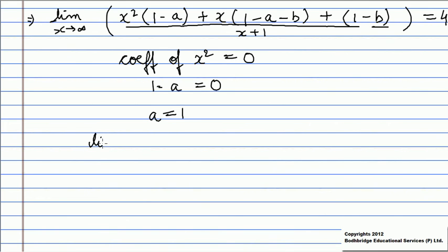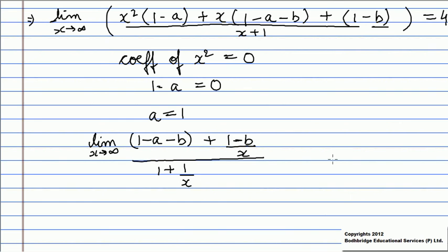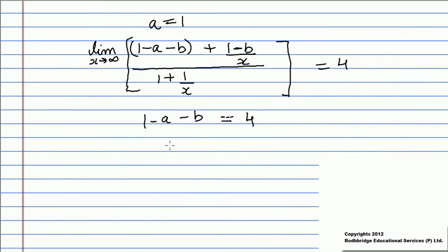Then, the limit as x tends to infinity of (1 - a - b + (1 - b)/x) upon (1 + 1/x) equals 4. Which implies 1 - a - b equals 4. Substituting a = 1, we get 1 - 1 - b = 4. That is, b equals minus 4.